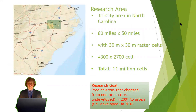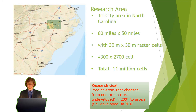Our research area is in North Carolina. It's called the Tri-City. It's an 80 miles by 50 miles area. We split this area into 30 by 30 meter raster cells. That gives us a total of 4,300 by 2,700 raster cells — in other words, a total of 11 million cells. The research goal is to predict areas or raster cells that changed from non-urban in 2001 to urban in 2016.